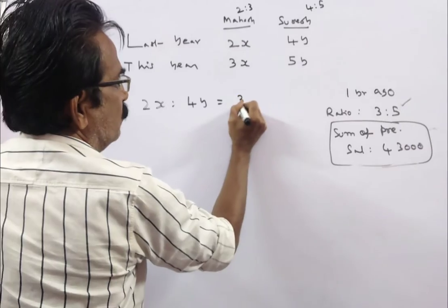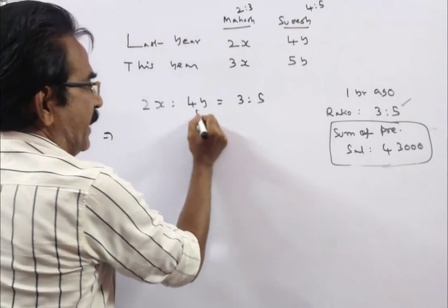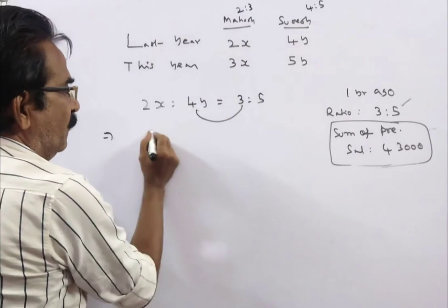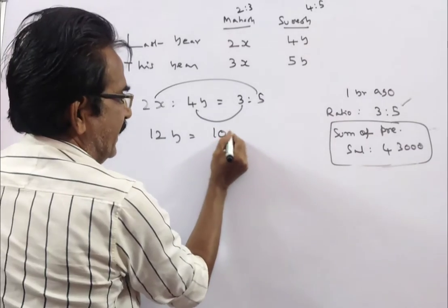2x to 4y equals 3 to 5. This implies 3 into 4y equals 5 into 2x, which gives 12y equals 10x.